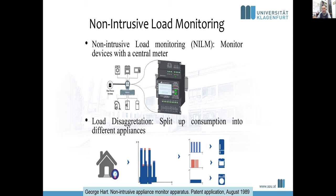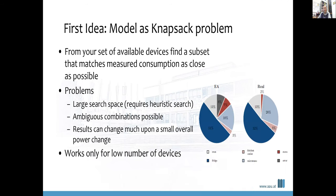This is not a new idea. There was a patent in 1989 by George Hart that already suggested a non-intrusive appliance monitoring approach, with later work in the 1990s. Then for some time there wasn't much research until it was rediscovered about 15 years ago, when smart meters were being rolled out and energy overconsumption and CO2 emissions became pressing concerns. As a first idea, you can model the problem as a knapsack problem: you have a number of devices with known power ratings, and you find the set of active devices that most closely matches the measured consumption.